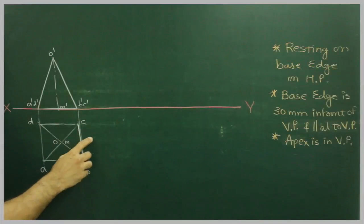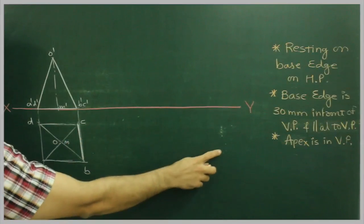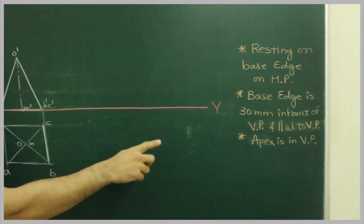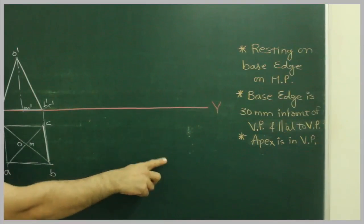They are talking about BC, which is 30 mm in front of VP - that is in the final stage. And apex is in VP, that is also in the final stage.